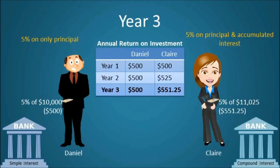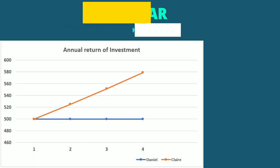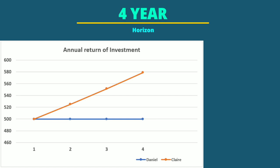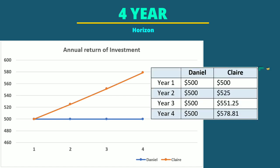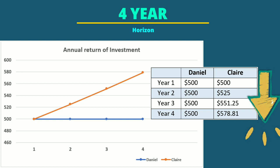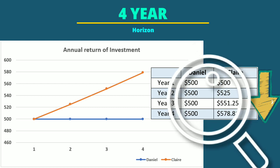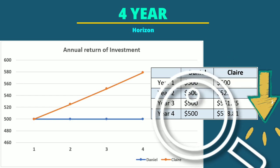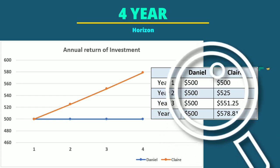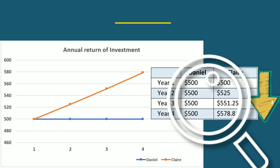The effects of compound interest are even more profound when we compare Daniel and Claire's return on investment over a 4-year horizon, with Claire's annual return climbing from $500 all the way to approximately $578. So, what's going on here? Why has Claire's interest increased more than Daniel's interest, even though they deposited the same principal amount?